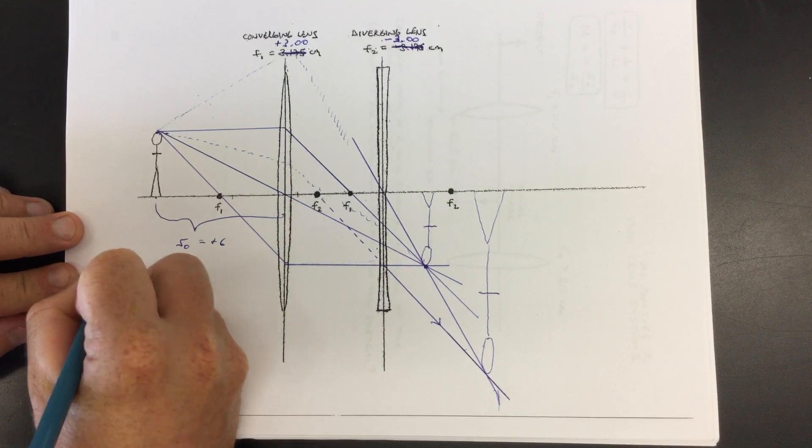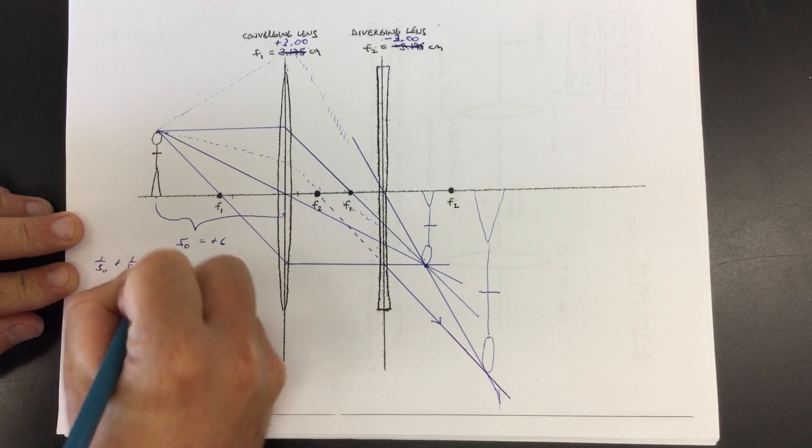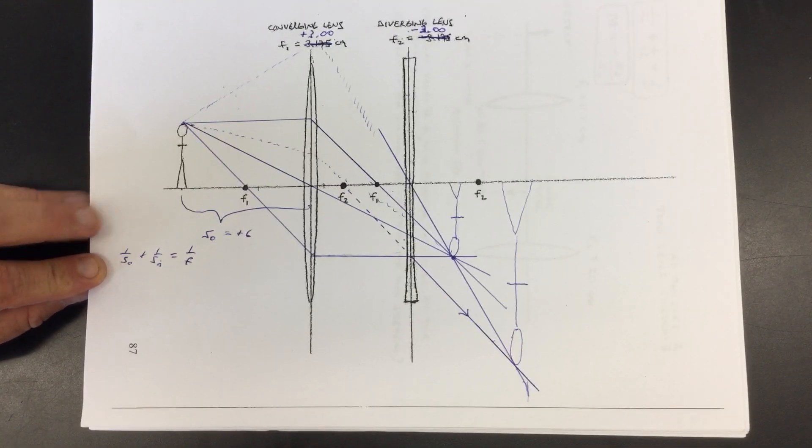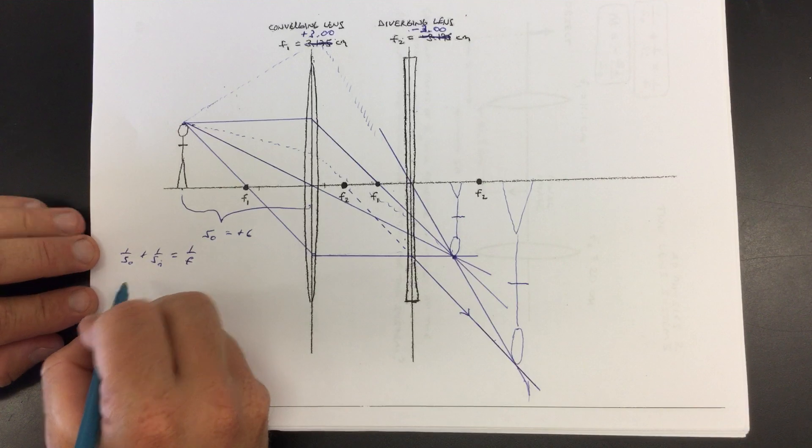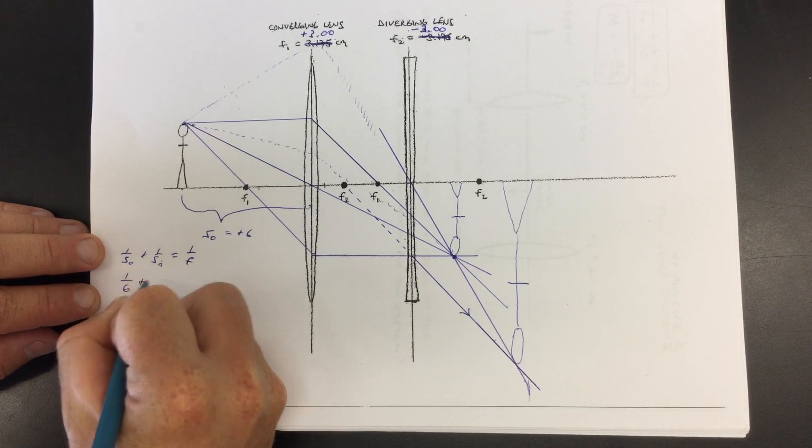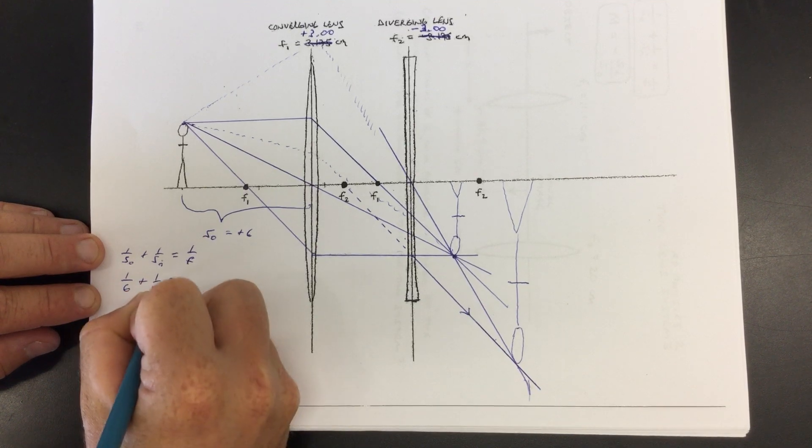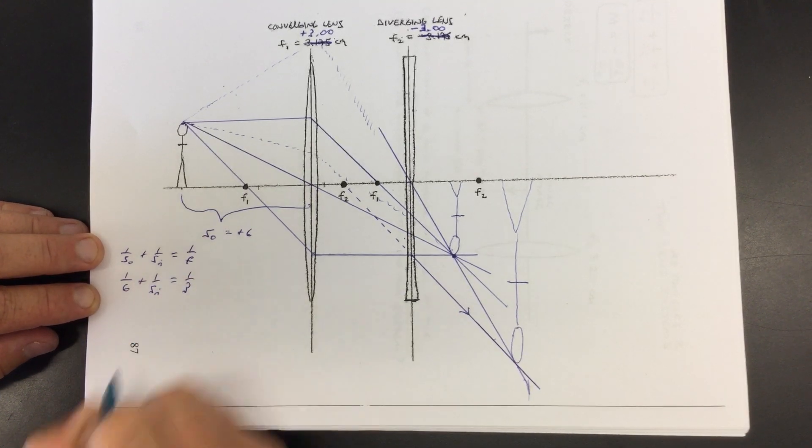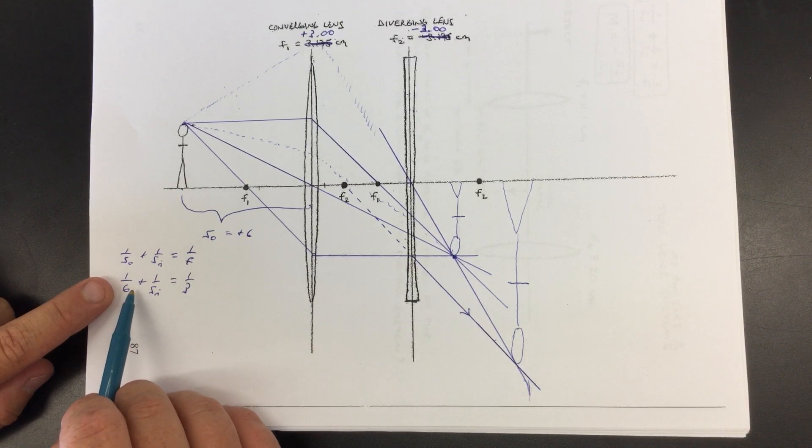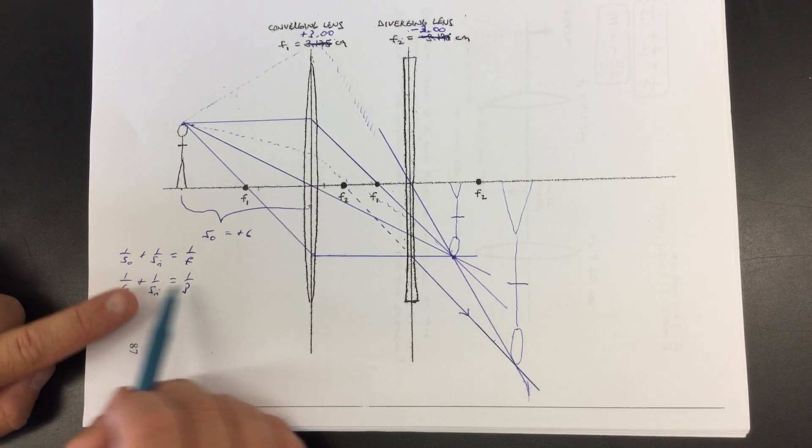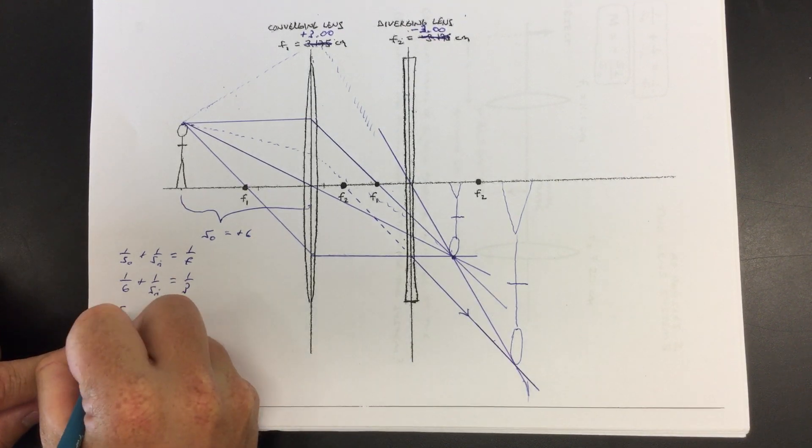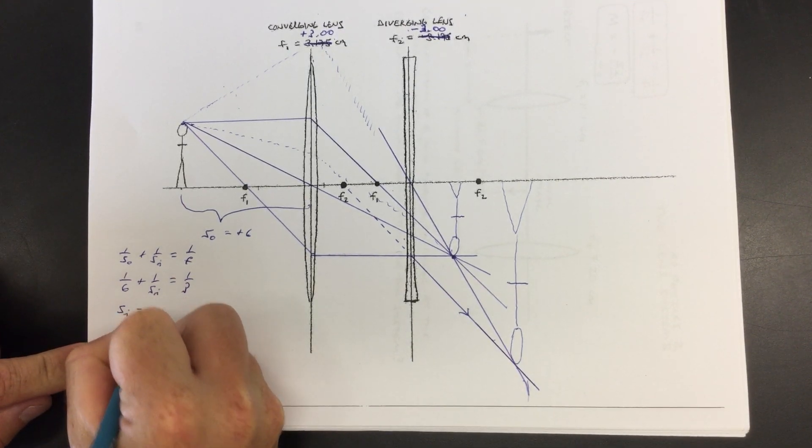So you'd say one over SO plus one over SI is one over F. Move that over. And so let's go for it. So you get one over six plus one over the thing we don't know equals one over three. I'm going to go a little quicker this time because look, a sixth plus a sixth would be two six or one third. So that means that this thing needs to be a six. So SI equals positive six.